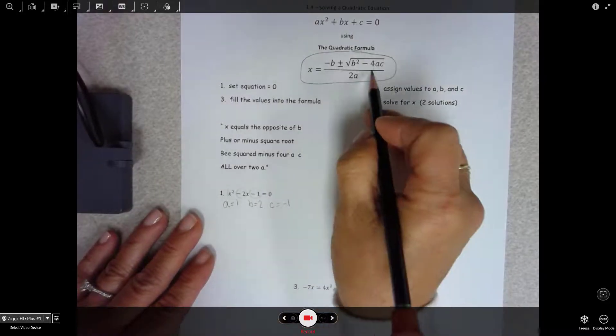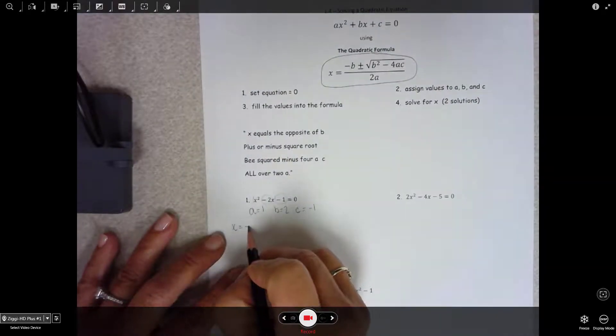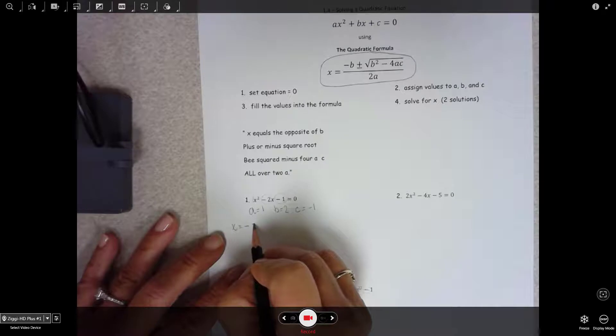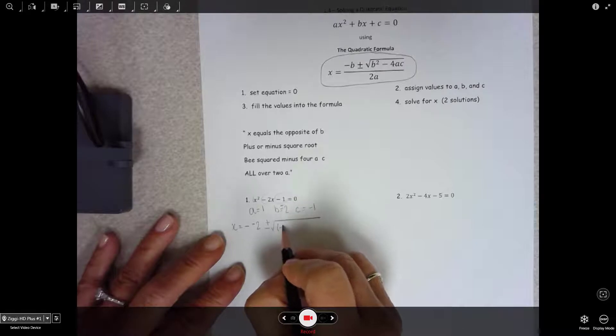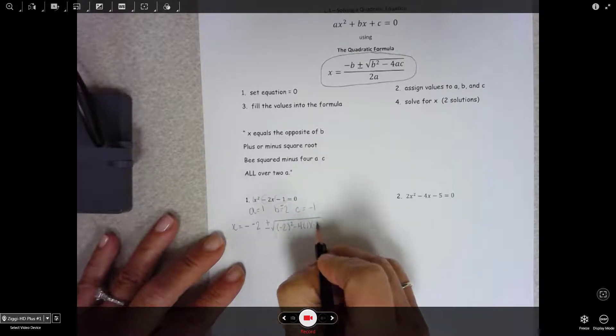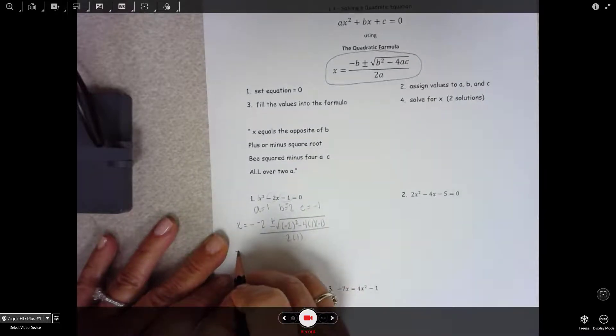So then you just plug and chug. X equals the opposite of B, which is a negative 2, plus or minus square root B squared minus 4AC all over 2A. And then it's just arithmetic.